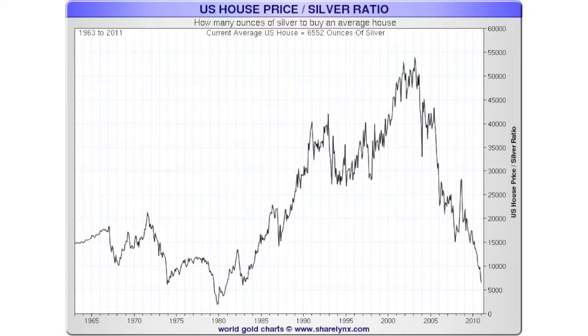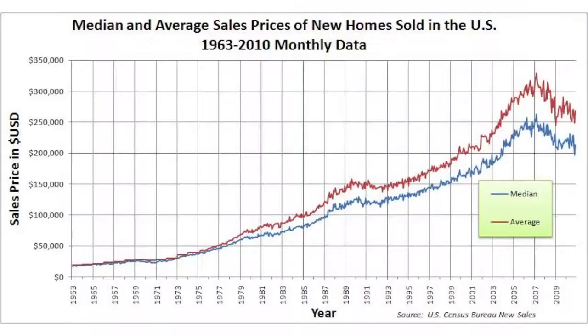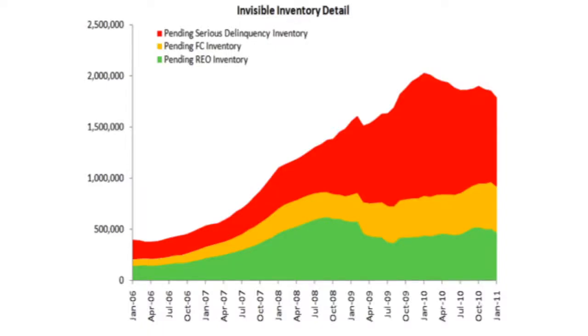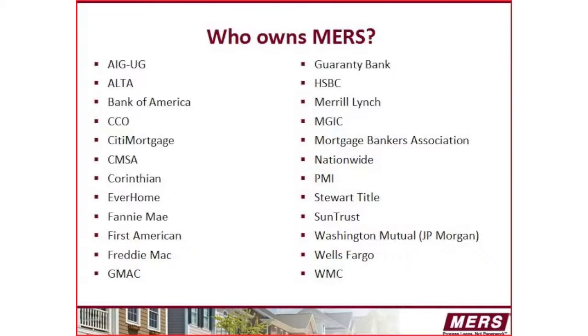I believe that we have much further to go. I can tell you from first-hand experience that we are nowhere near the bottom of housing. Until jobs come back, there will never be a recovery in housing. There is a huge shadow inventory of either foreclosed homes held off the market or homes where people have not paid their mortgages in years. Then there's the whole MERS mess — the mortgage electronic registration system — that has not been resolved. Think about how many houses were sold with fraudulent documents.